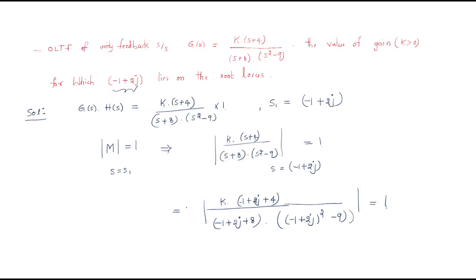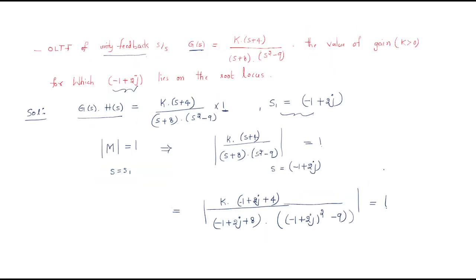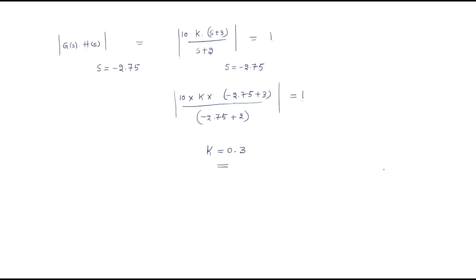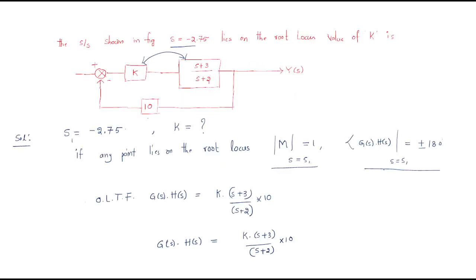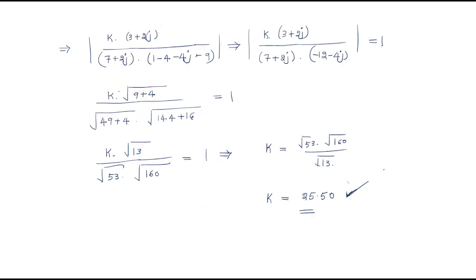This problem follows the same approach as the previous one. The open loop transfer function is given directly, and with unity feedback H(s) equals 1. Write G(s)H(s), substitute the given s1 value, and solve using the magnitude condition to find K. These are the root locus model problems. I hope all of you enjoyed the session. Thank you.